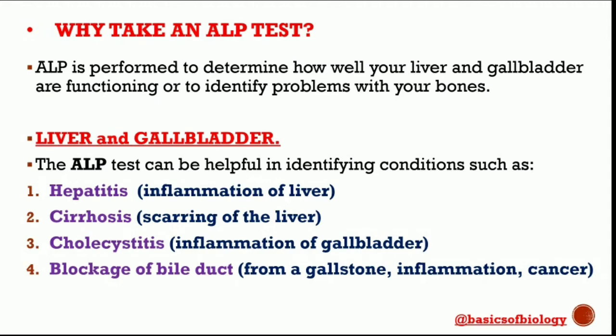The alkaline phosphatase test can be helpful in identifying conditions such as hepatitis — the inflammation of the liver — cirrhosis, which is scarring of the liver, and cholecystitis, the inflammation of the gallbladder. Blockage of bile ducts from a gallstone, inflammation, or cancer may also be identified. You may also need an alkaline phosphatase test if you are taking a medication that has the potential to damage your liver.